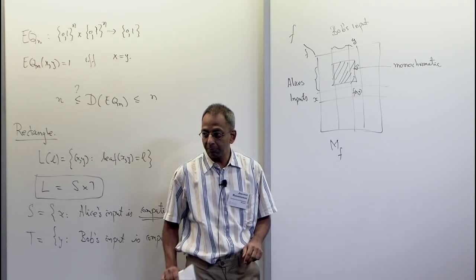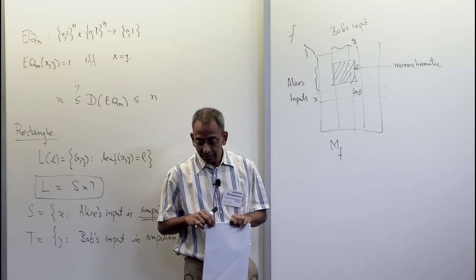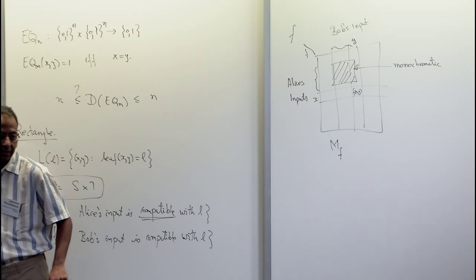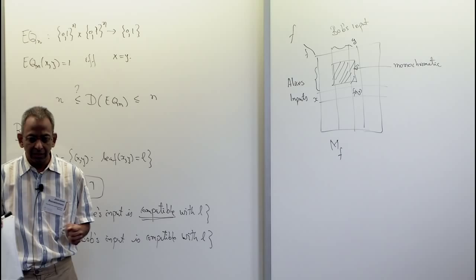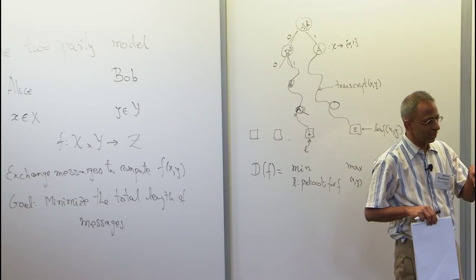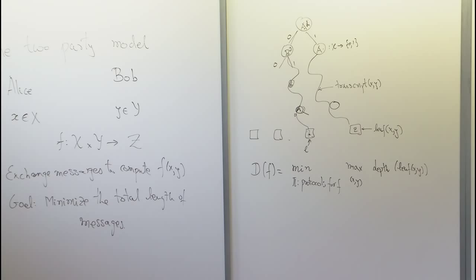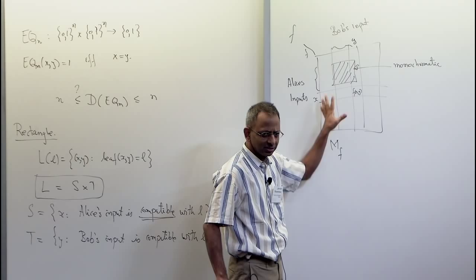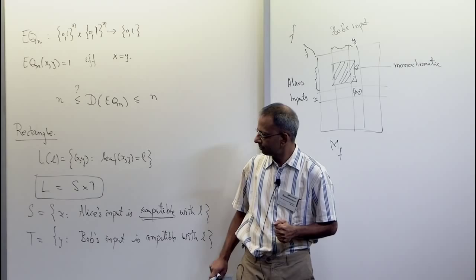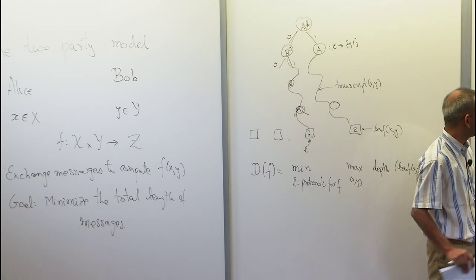If this matrix doesn't admit large monochromatic rectangles, then we conclude that the number of leaves in the protocol tree must be large, and if the number of leaves is large, then the depth must also be large. So: rectangles must be monochromatic; if we can force a large number of rectangles to decompose this matrix, we get a lower bound on the deterministic complexity of the function. Let's implement this plan for the equality function.